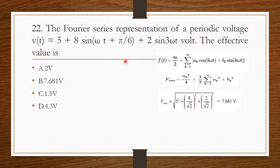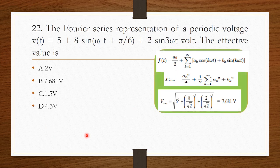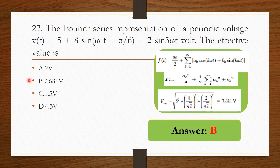The Fourier series representation of a periodic voltage V(t) = 5 + 8·sin(ωt + π/6) + 2·sin(3ωt) volts — we have to find the effective (RMS) value. Using the RMS formula, the answer is 7.681 volts. Therefore option B is the right answer.